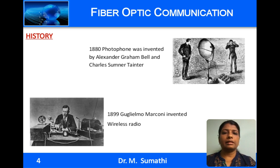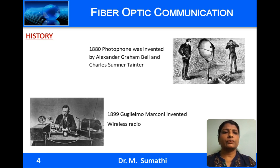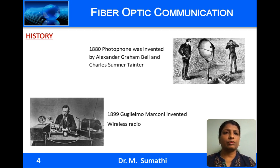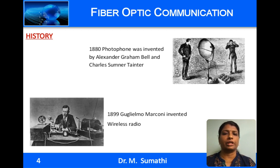In 1880, Alexander Graham Bell invented the photophone, and he considered this to be his most significant and important invention. Using the photophone, he transmitted voice using light over a distance of 213 meters with air as the medium. But since air was used as a medium, atmospheric disturbances such as fog, mist, and rain affected the transmission of the signal. Therefore, the photophone was not a reliable mode of communication.